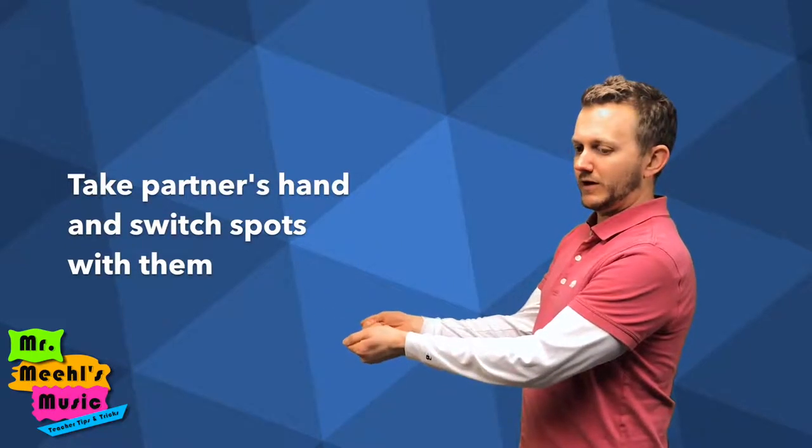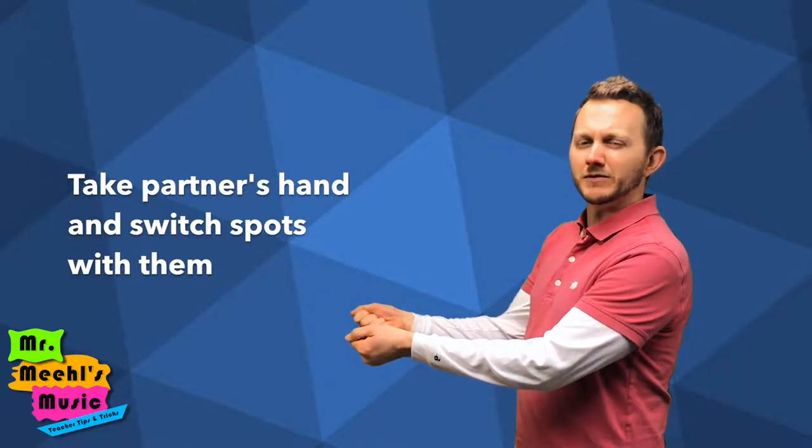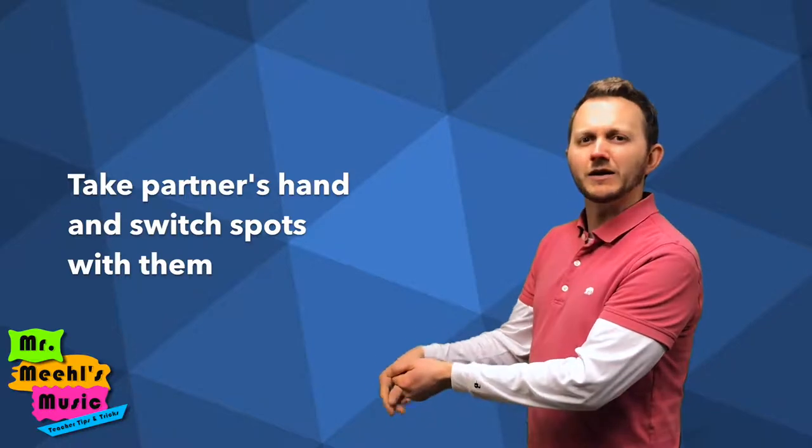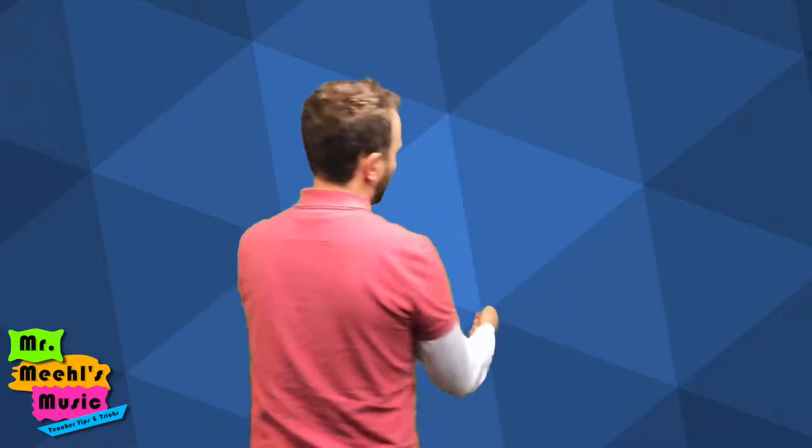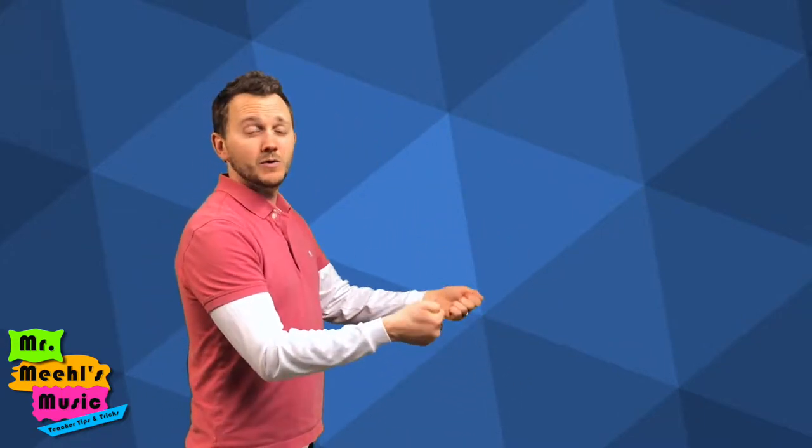The third part of the song is 'Little Tommy Tucker's dog.' They're going to be taking each other's hand and switching spots, so they're going to stand where their partners were. They rotate around, and now they're standing where their partner used to be.